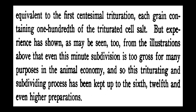Each grain contains one-tenth of a grain of the cell salt triturated. One part of this first decimal trituration is used, and another nine parts of sugar of milk is added and again triturated for two hours, giving the second decimal trituration. Experience has shown that even this minute subdivision is too gross for many purposes in animal economy, so the triturating and subdividing process has been kept up to the sixth, twelfth, and higher preparations.